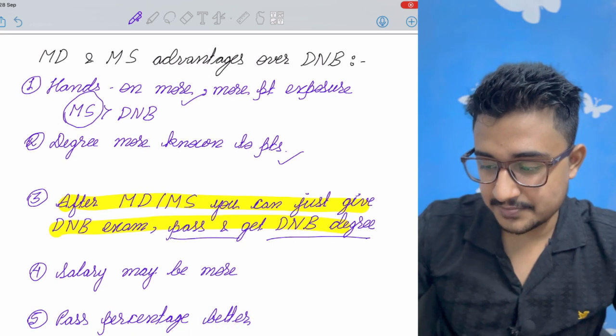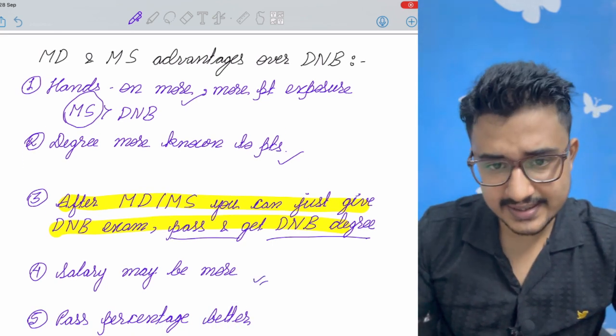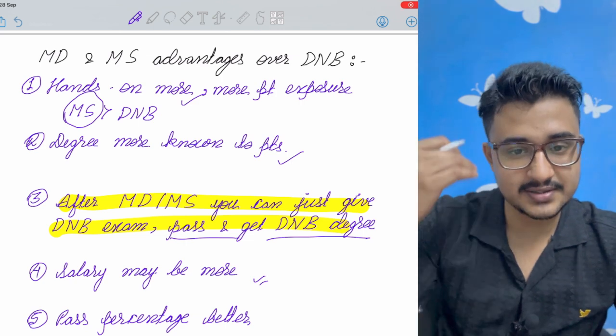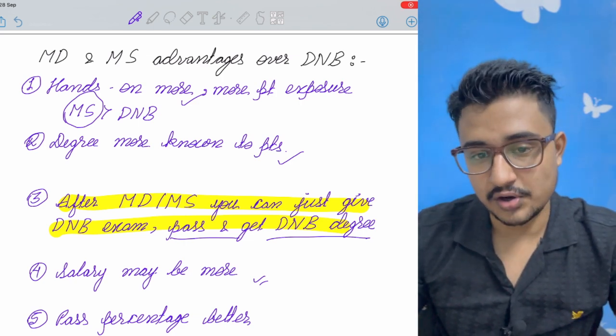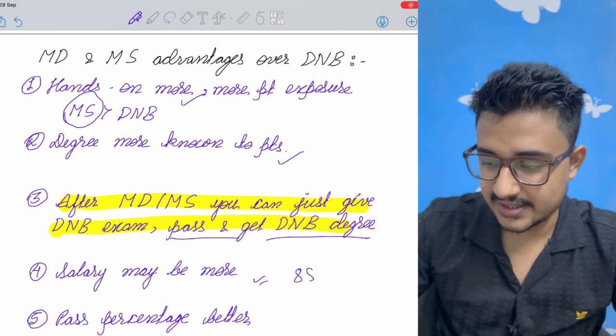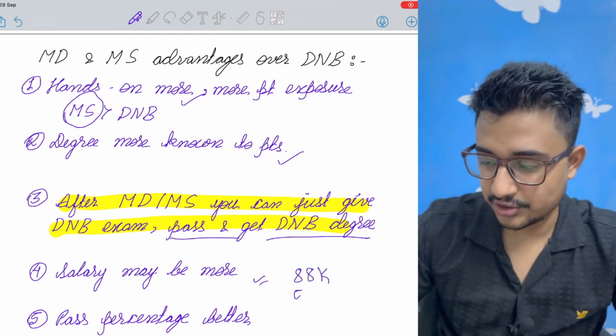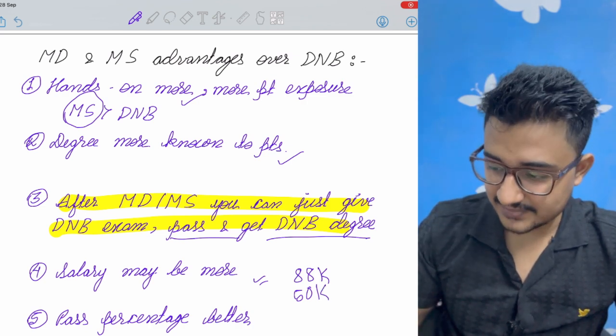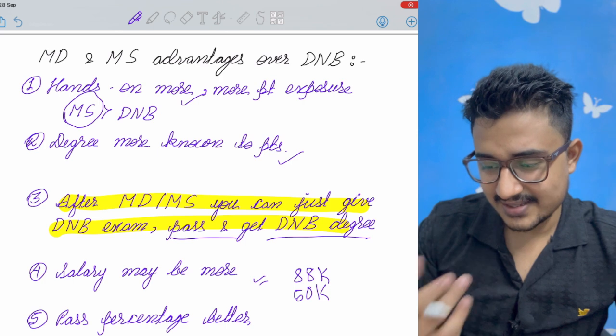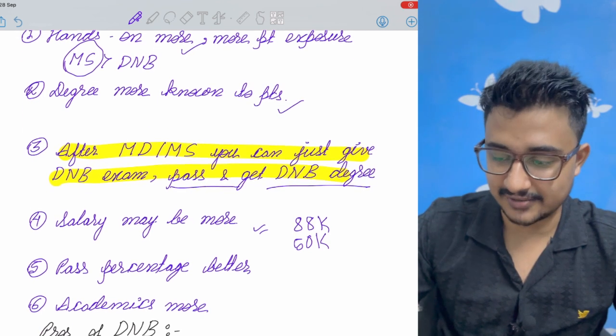Salary is sometimes more. More or less it is equal. In cases compared to the state hospitals if you go to good DNB institutes like Gangaram of Delhi you get about 88k in first year itself and in many state government hospitals you get about 50k like in West Bengal. So some cases it may be less also but as a rule it is more or less the same. I can't tell it as a direct advantage.